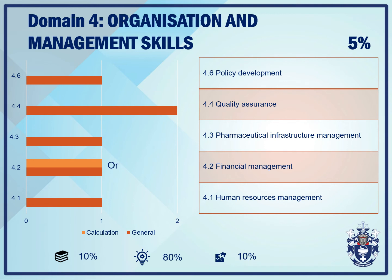A smaller portion — 5% of the pre-registration examination — is based on Domain 4, Organisation and Management Skills. There are 7 questions with 1 possible calculation question. There are no questions relating to Change Management, Competency 4.5. You can expect 1 general question relating to Competency 4.1, either 1 general or 1 calculation question relating to Competency 4.2, 1 question within 4.3, 2 questions from 4.4, and 1 question from 4.6. The types of questions: 10% knowledge, 80% application, and 10% problem solving.